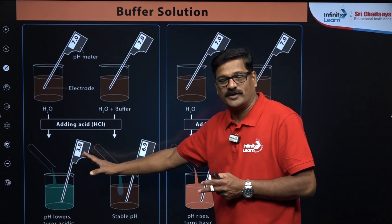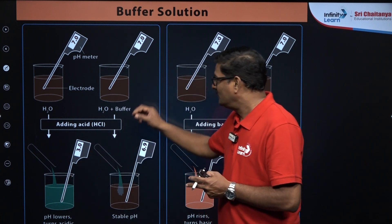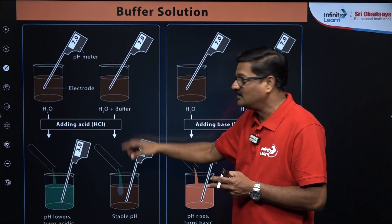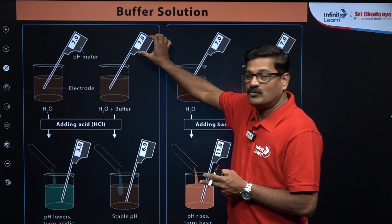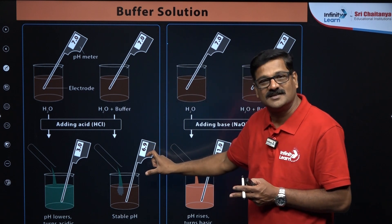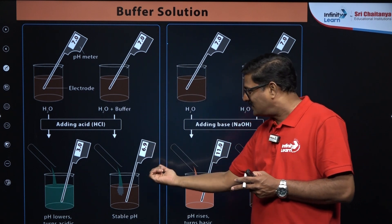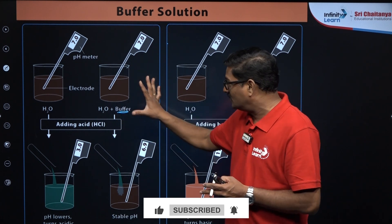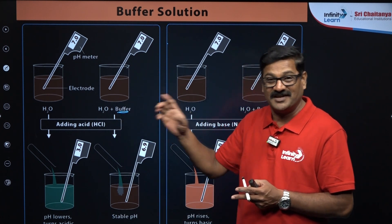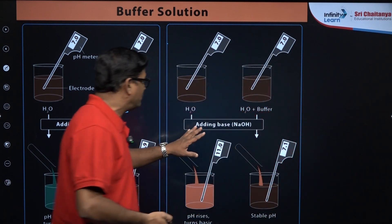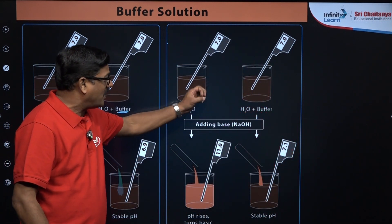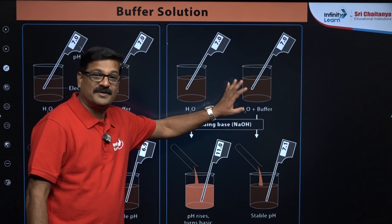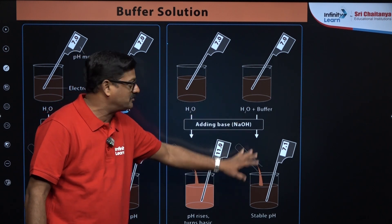So the pH is going to be less than 7 — it is going to be 3. If you add a buffer along with this water and then add a little bit of HCl, the buffer pH was 7 and it remains nearly 7 or a little bit less than that. So a buffer solution is a solution that resists the change in pH. Similarly, if you add sodium hydroxide to water, the pH increases; but if you add a buffer to that, the pH is going to be much more resistant.